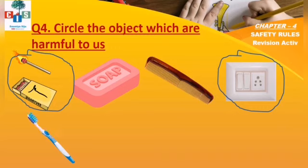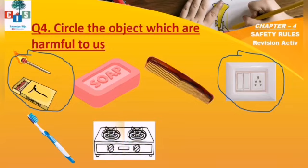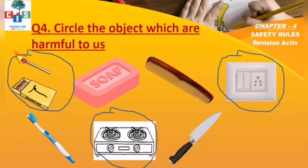Then, toothbrush — is it harmful? No. Then, gas stove — is it harmful? Yes, it is harmful. Then, knife — knife is a sharp object, so we should not play with this. It is also harmful, so circle it.